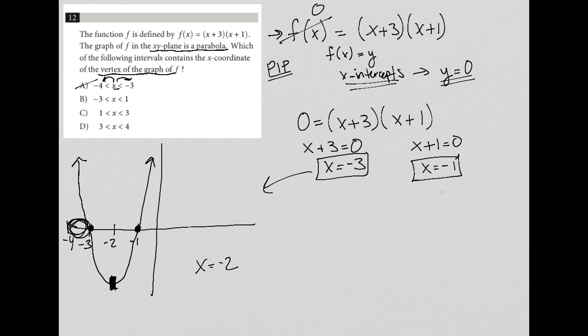Choice B says x is between -3 and positive 1. The value x = -2 is somewhere between -3 and positive 1. So I do like that one.